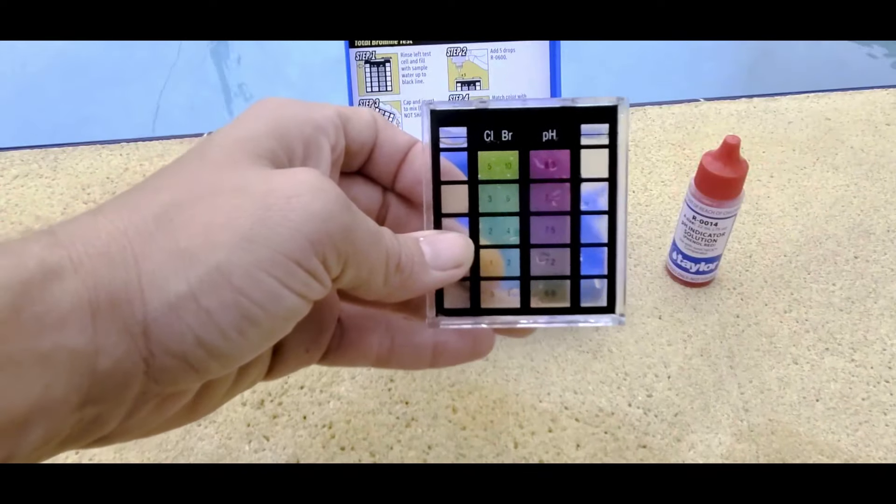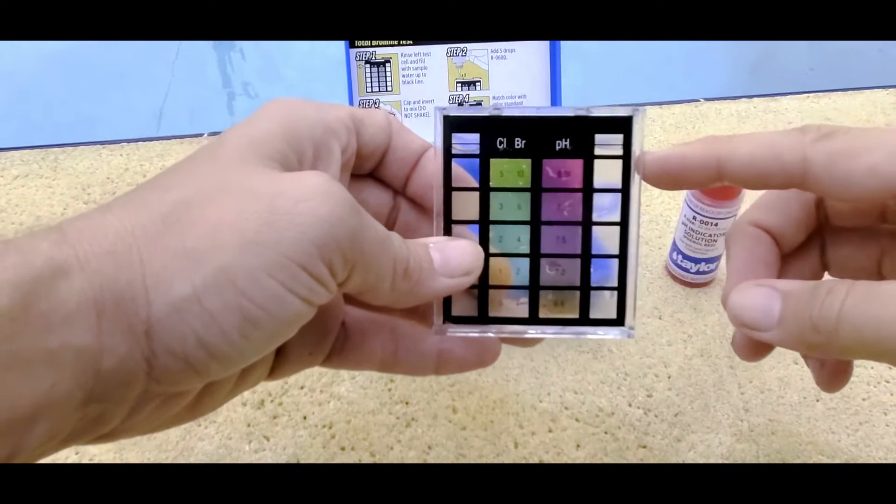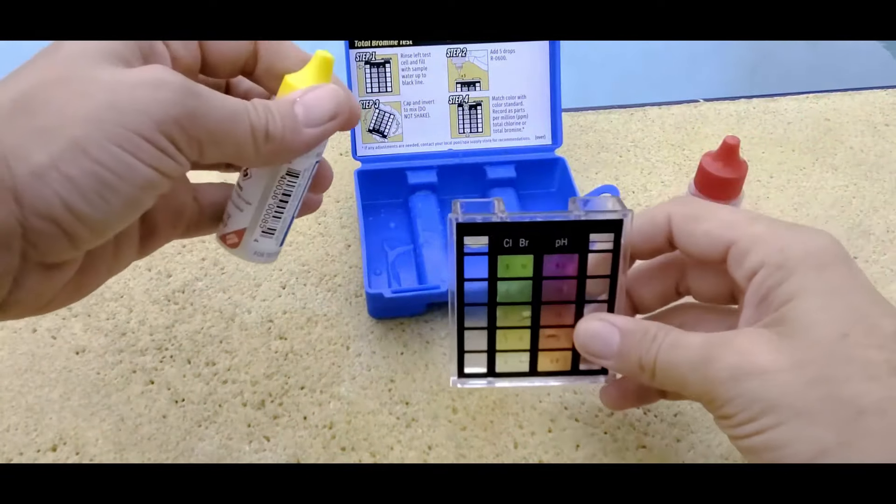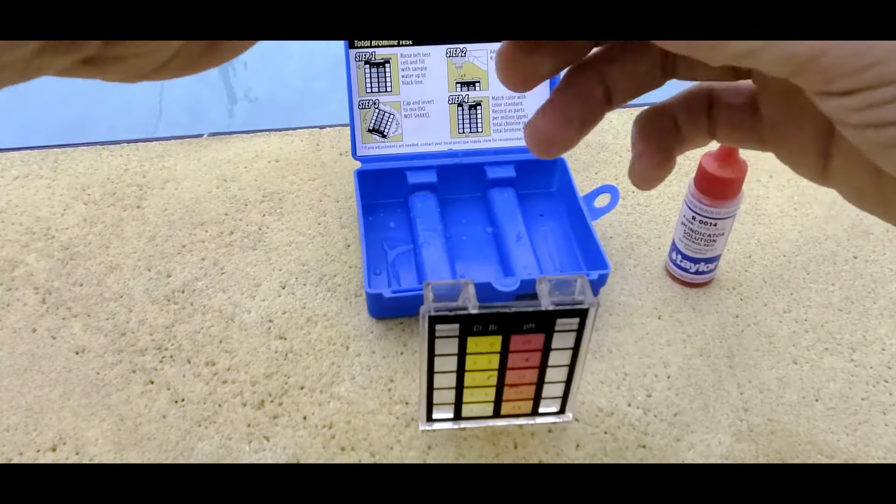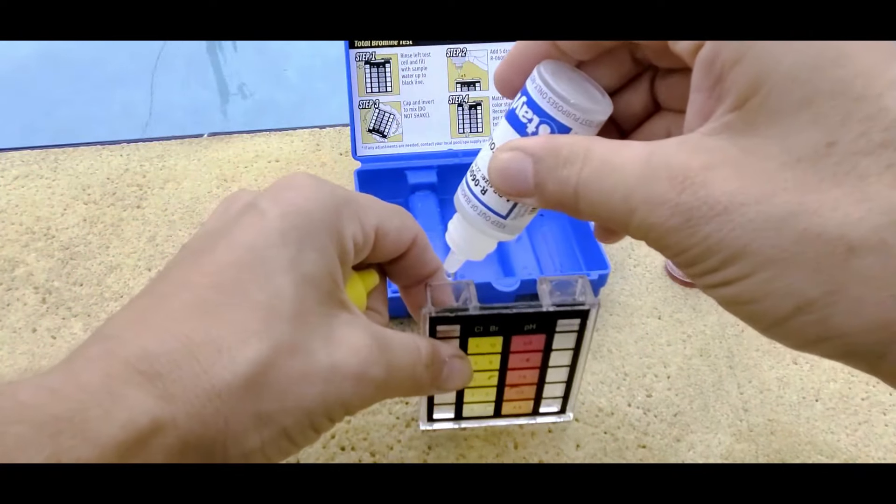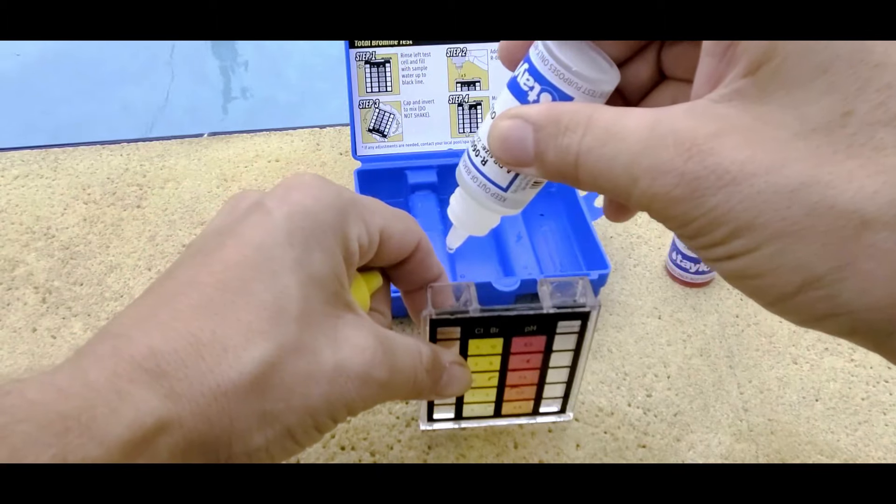Alright, so I've filled it up with pool water up to the line here on both sides of this. So we're just going to go ahead and do a quick test. So I'm going to add five drops of the chlorine dye solution. One, two, three, four, five.